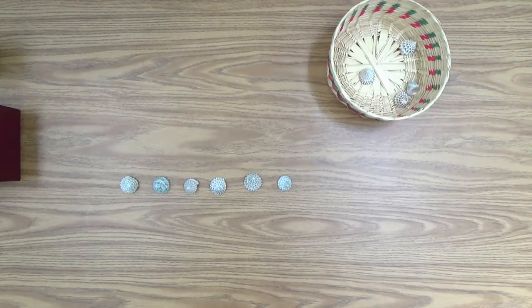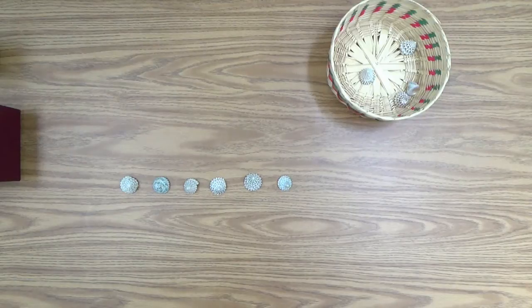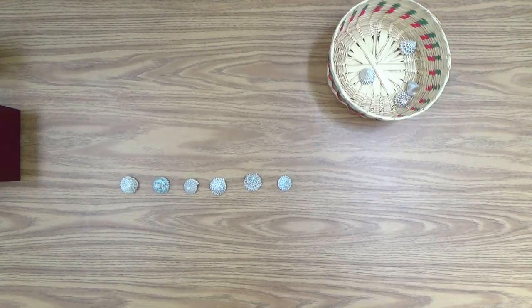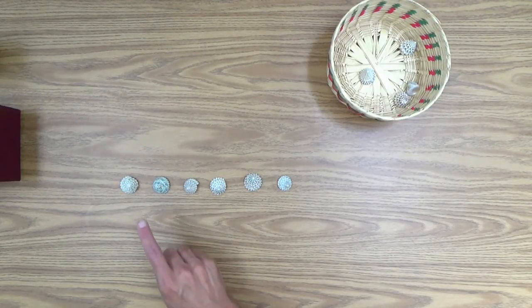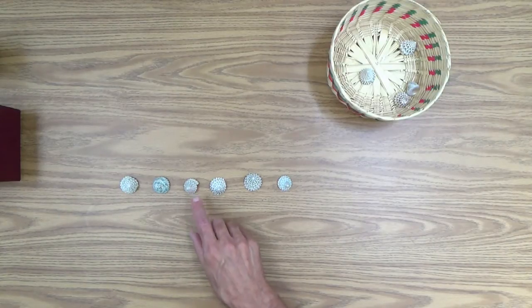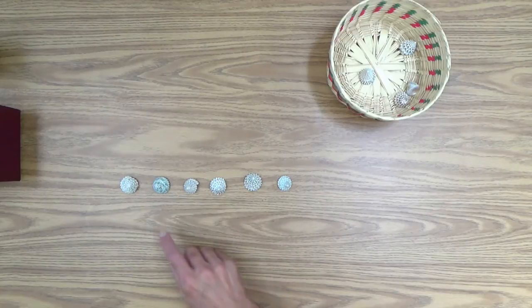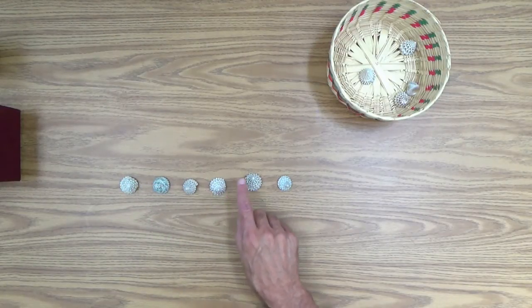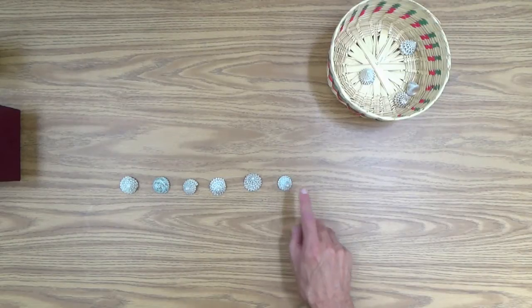Of course, that's very obvious to an adult. To a child, not so obvious. So what you want her to do, you've just modeled the activity. You would like her to do exactly what you just did. She touches, she counts. She touches, next number. She touches, she says the next number. Touches, says the next number. One, two, three, four, five, six.